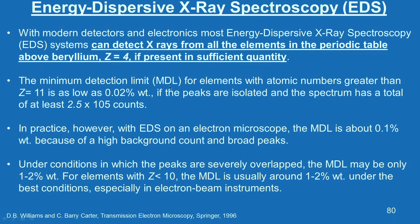The minimum detection limit (MDL) for elements with atomic numbers greater than 11 is as low as 0.02 weight percent, if the peaks are isolated and the spectrum has a total of at least 2.5 × 10⁵ counts. In practice, however, with EDS on an electron microscope the MDL is about 0.1 to 1 weight percent because of high background count and broad peaks. Under conditions where peaks are severely overlapped, the MDL may be only 1 to 2 weight percent; for elements with atomic number less than 10, the MDL is usually around 1 to 2 weight percent under the best conditions.